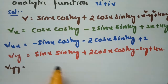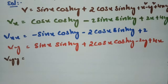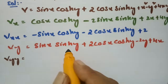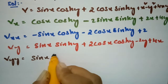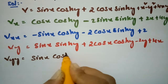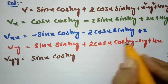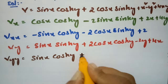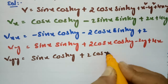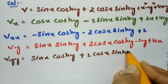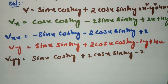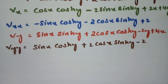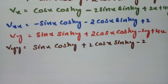Now I take the double derivative with respect to y. For sinh(y) this is cosh(y), so we get sin(x)cosh(y). For cosh(y) this is sinh(y), giving 2cos(x)sinh(y). The minus 2y term gives minus 2, and the constant 4x term gives 0. This gives us v_yy.